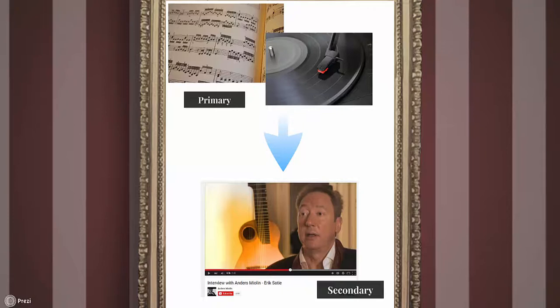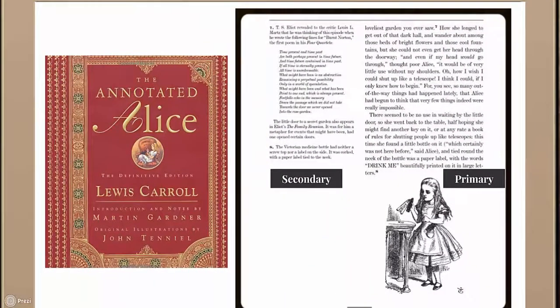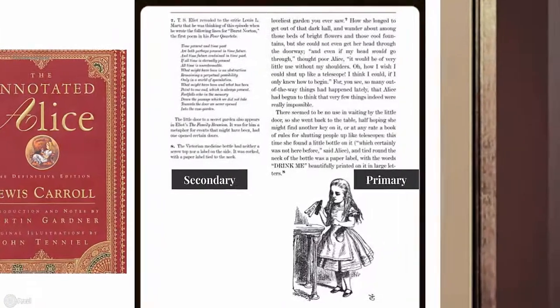Sometimes things can get very convoluted. For example, here's the annotated Alice in Wonderland. While the text and images of Alice in Wonderland are primary sources, the annotations surrounding the text that explain and analyze parts of the novel are secondary. This book could be used either as a primary or a secondary source, depending on how it's needed.